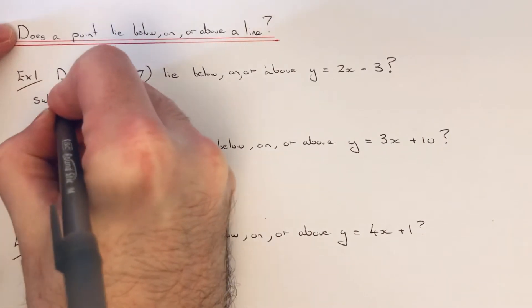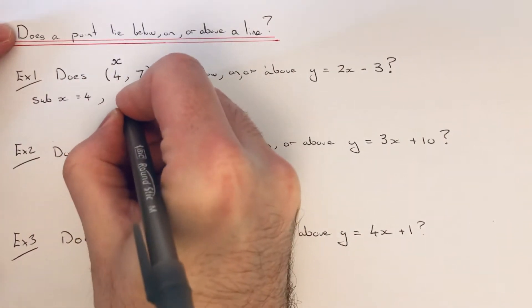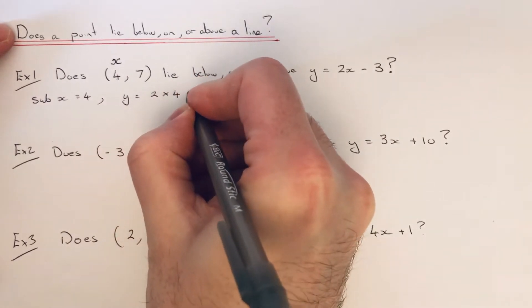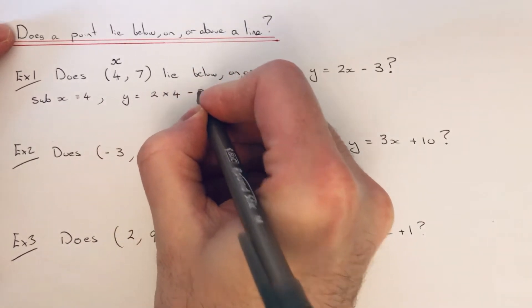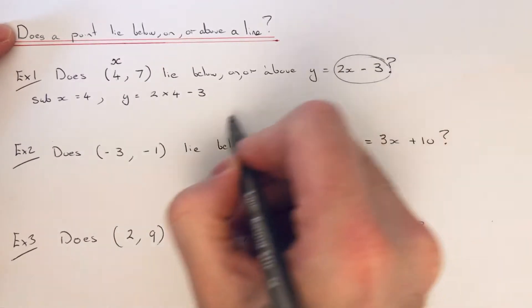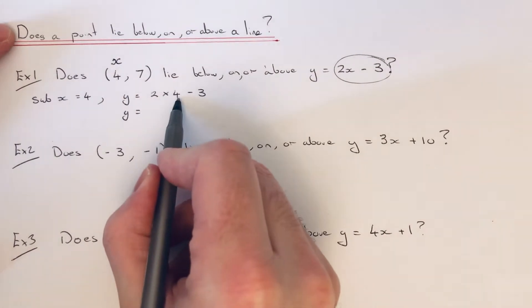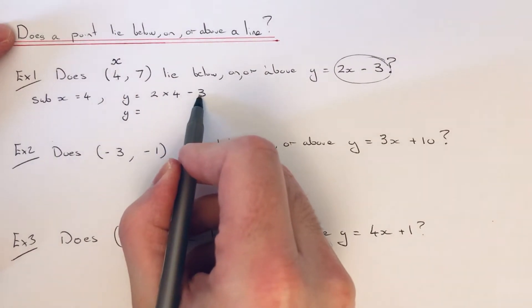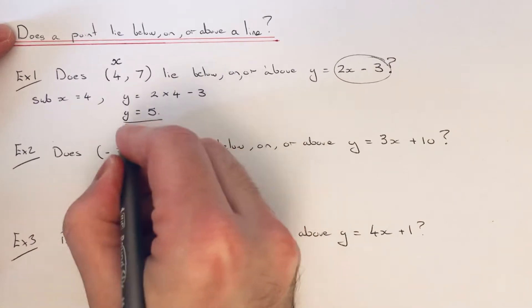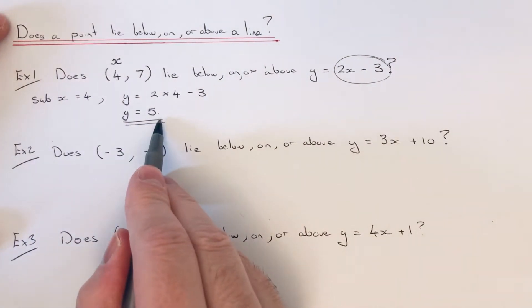We're going to sub in x equals 4, so it will be y equals 2 times 4, take away 3. I've just changed the x to 4 in this equation. So 2 times 4 is 8, 8 take away 3 is 5. So the y coordinate on the straight line is 5.